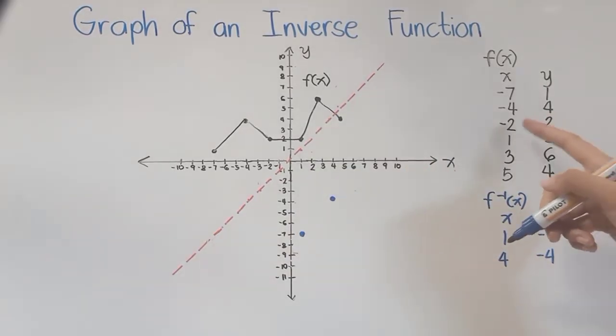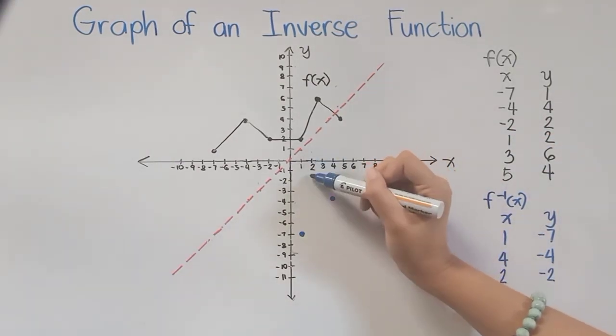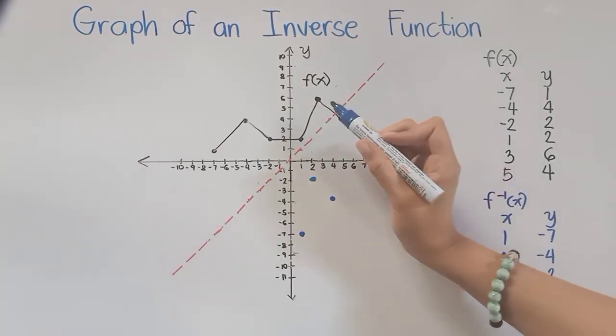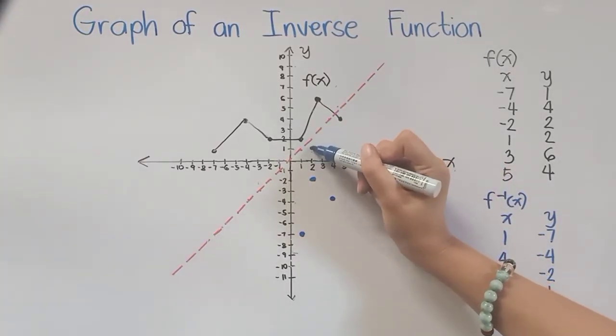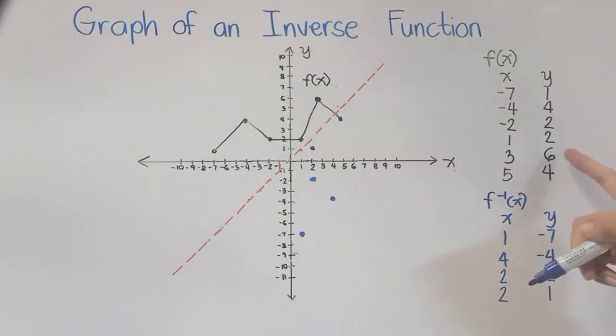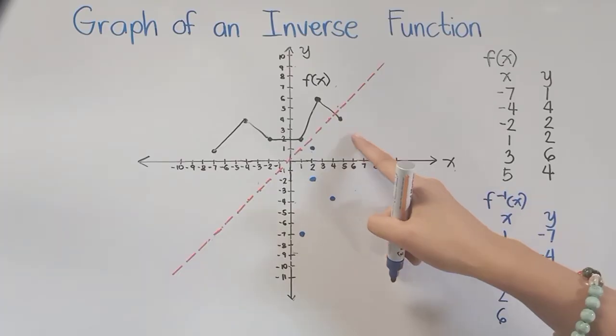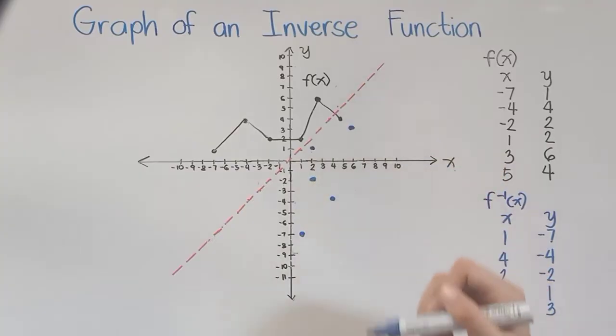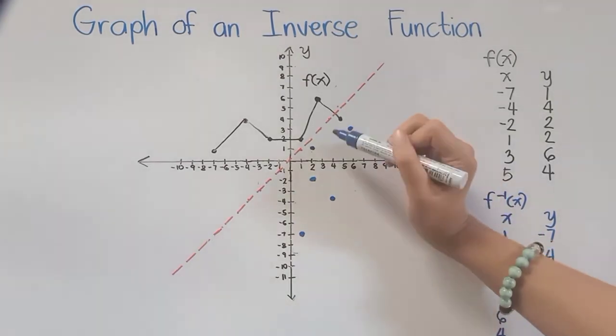And then positive 2, negative 2. It's here. Next, we have positive 2, positive 1, so just right above our previous point. And we also have positive 6, positive 3. So it's right here. And lastly, we have positive 4, positive 5, and it is located here.